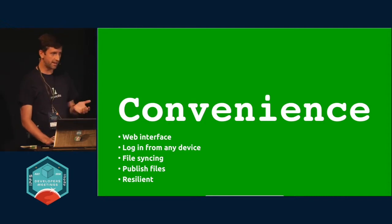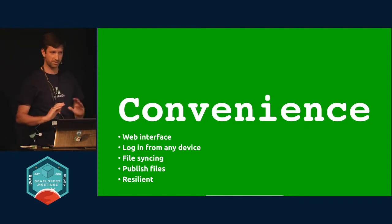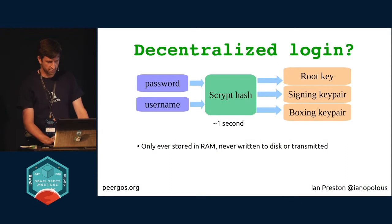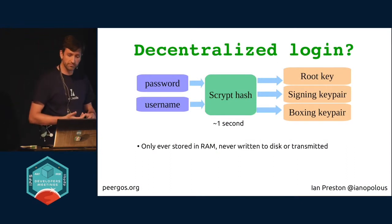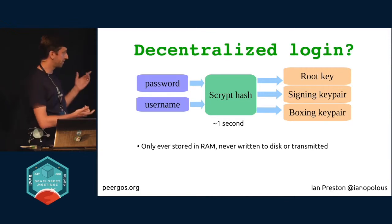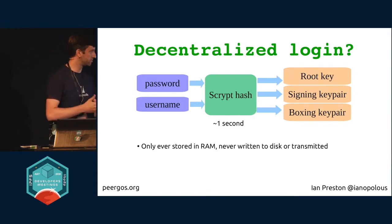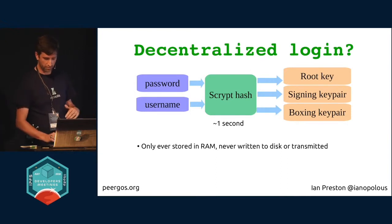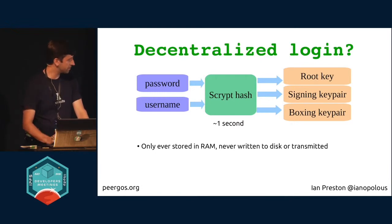And finally, the most important thing is convenience — it should be easy to use for a typical Facebook user. So there are no visible hashes, no visible keys, nothing like that. The first thing people want is to log in from any machine. The way we do that is we take your password, salt it with your username, and run it through scrypt, which is a memory-hard hashing function tuned to take about a second on a mobile phone or PC. That gives you two key pairs and a root symmetric key, which are only ever stored in RAM, never written to disk or transmitted.